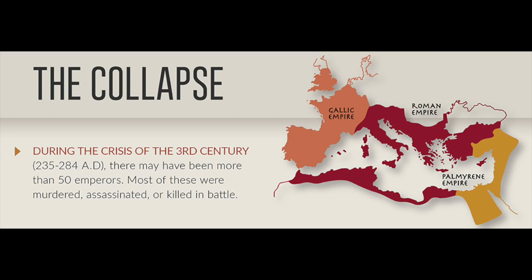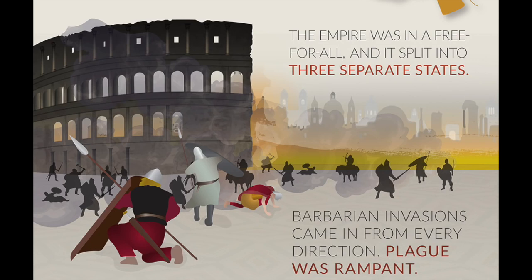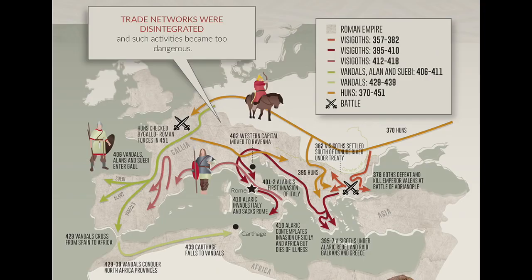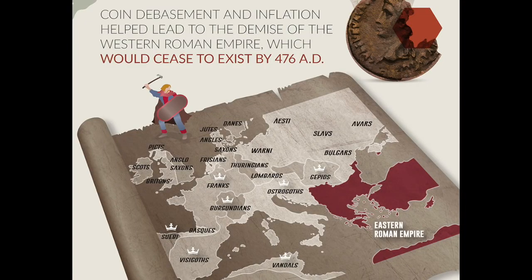Then there was the collapse. During the crisis of the 3rd century, 235–284 AD, there may have been more than 50 emperors — most were murdered, assassinated, or killed in battle. The empire was in a free-for-all and split into three separate states. Barbarian invasions came from every direction: the Visigoths, the Vandals, the Huns — just pouring into Rome, taking and burning what they wanted. Plague was rampant, trade networks disintegrated, and such activities became too dangerous. The empire was beyond repair. Coin debasement and inflation helped lead to the demise of the Western Roman Empire, which ceased to exist by 476 AD.